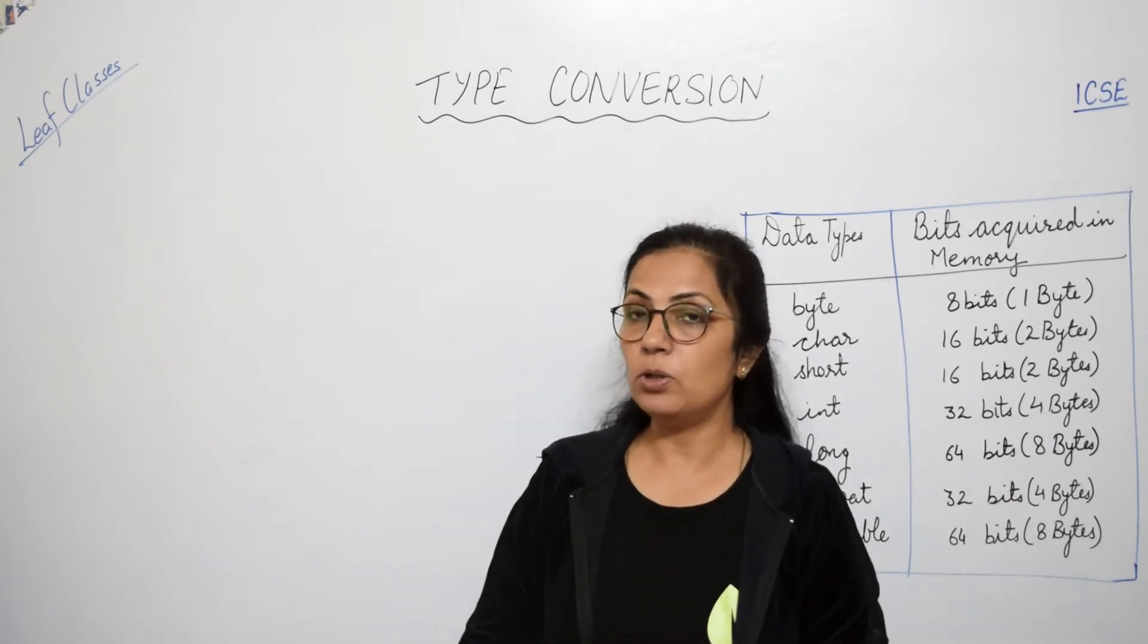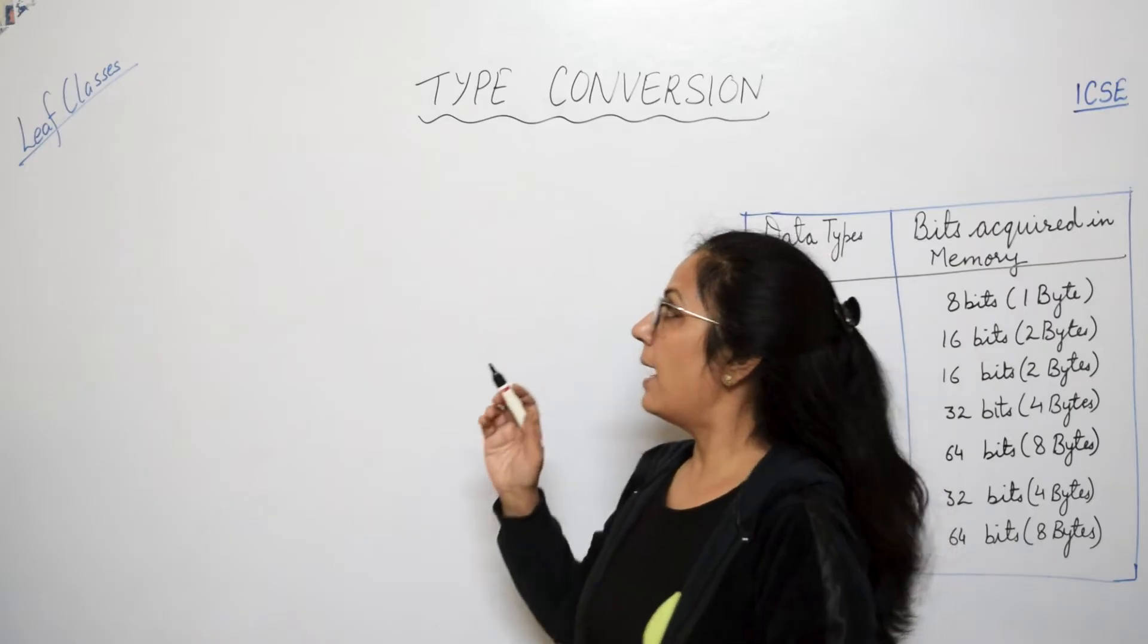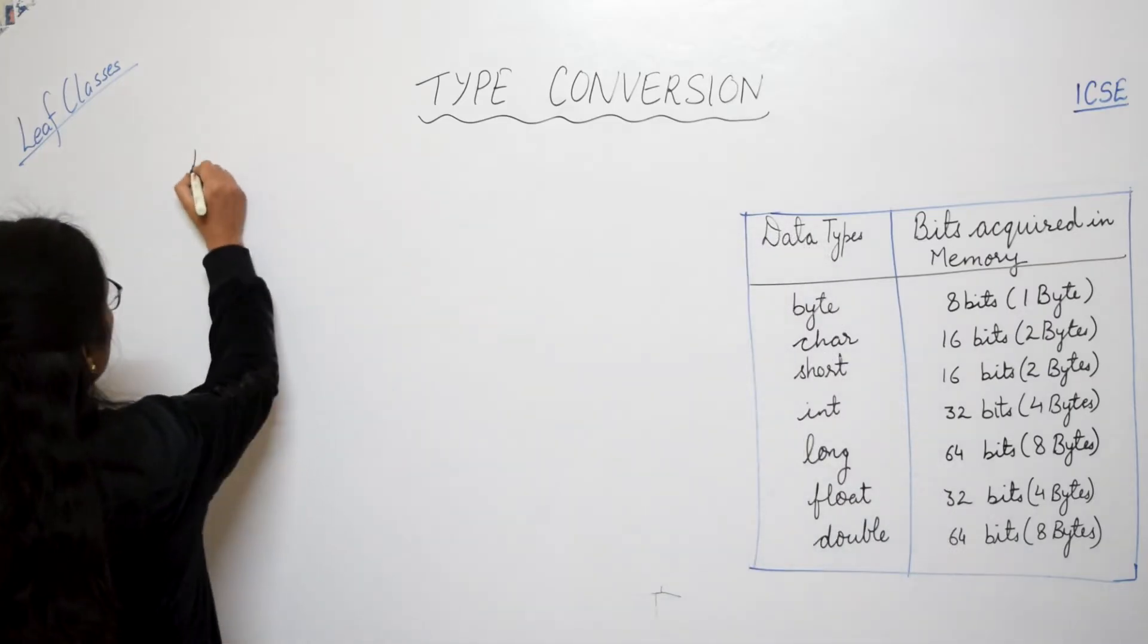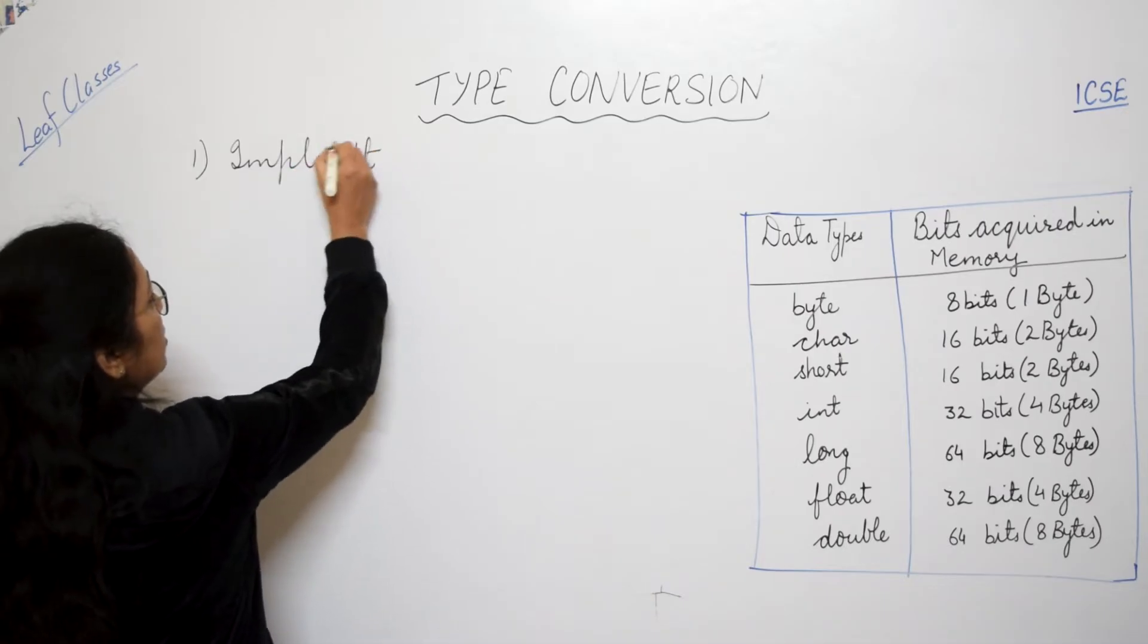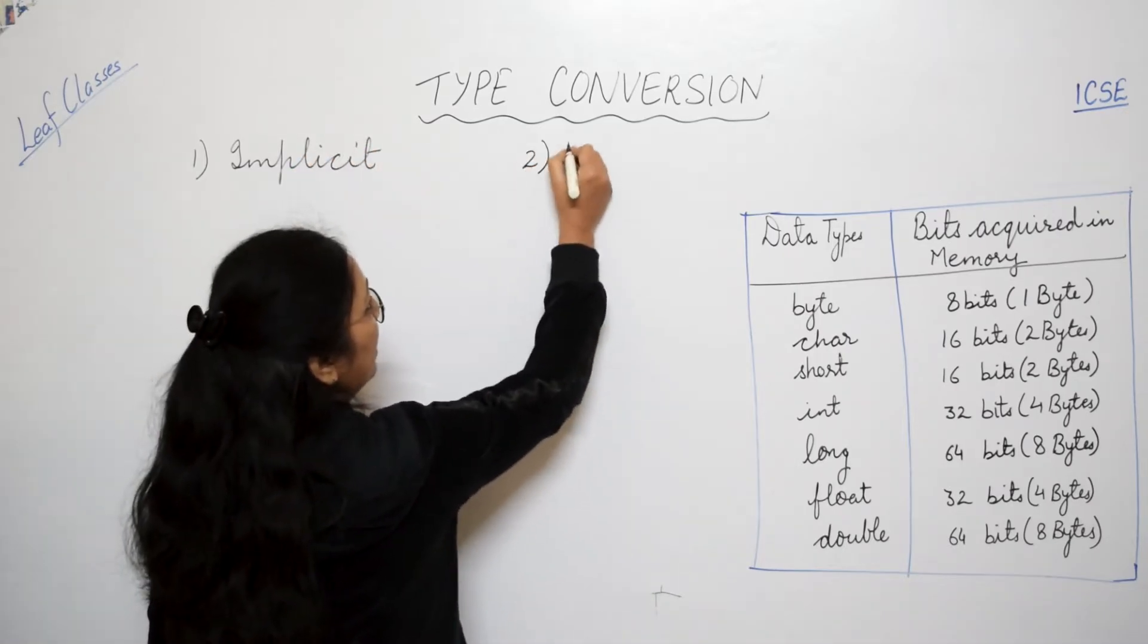So today we will do both types of conversions. And in this, first is implicit conversion and the second is explicit conversion.